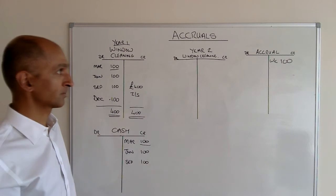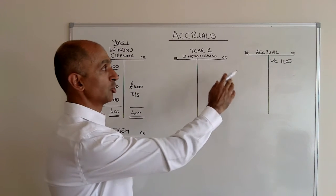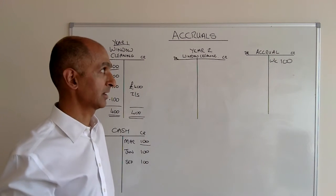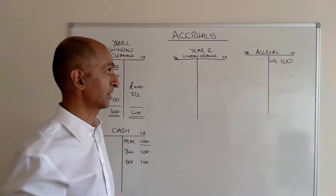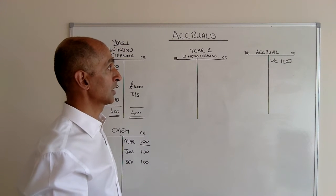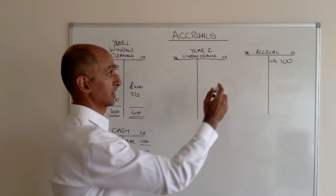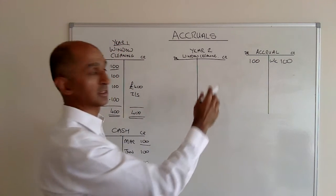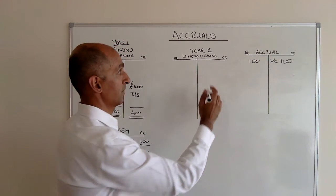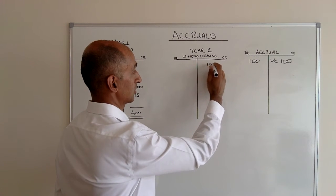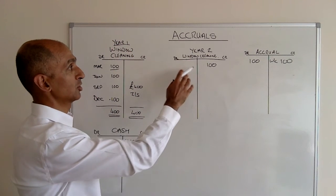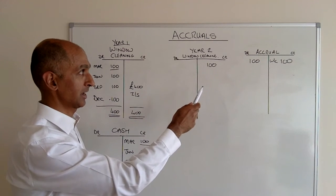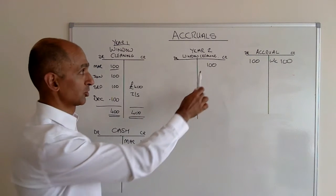On the 1st of January in the new year, you open with a credited accrual of 100 pounds, which is a current liability — it's the same as having a creditor payment due of 100 pounds. But because this is an accrual, what you do at the start of the year is you actually zero that out. So you debit the accrual to bring it back to zero and you credit the relevant account, which in this case is the year two window cleaning expense account.